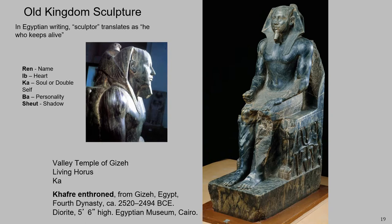This statue gives the Ka a base to return to. And this statue would have been treated as if it were a living person. The priests of the pharaoh's temple would have bathed it, they would have offered it food, they would have treated it like the pharaoh himself.